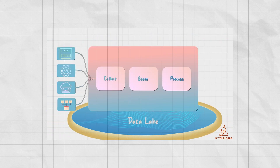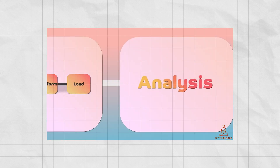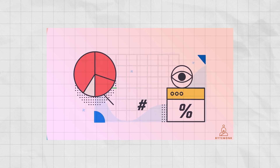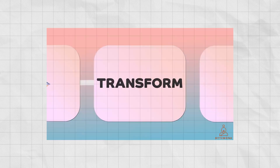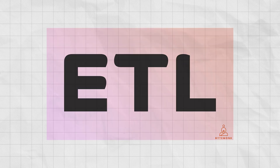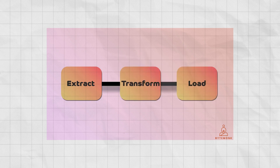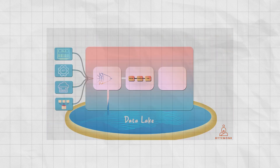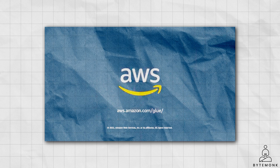In today's data-driven world, the ability to turn raw data into actionable insight is a superpower. And at the heart of this transformative process lies ETL, which stands for Extract, Transform and Load. But with data growing at an unprecedented rate, traditional ETL methods are struggling to keep up. AWS Glue is the dynamic solution that's changing the game.